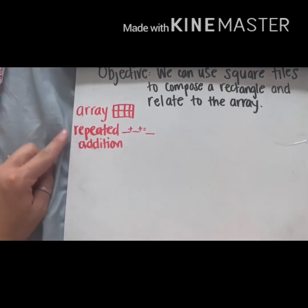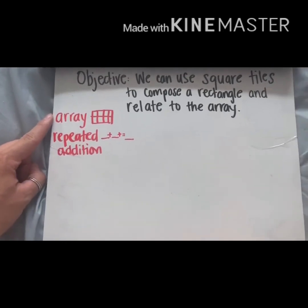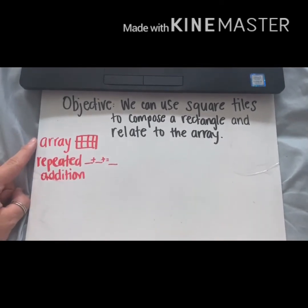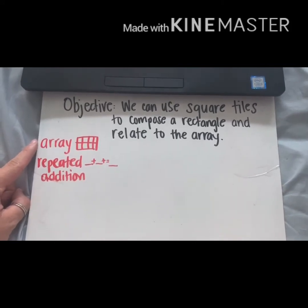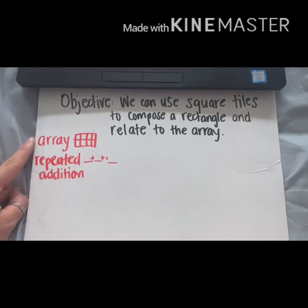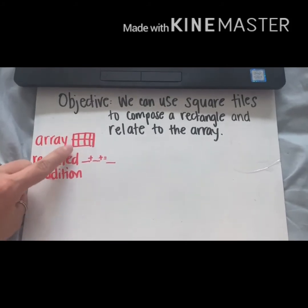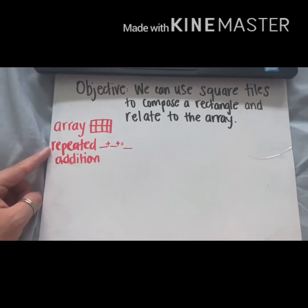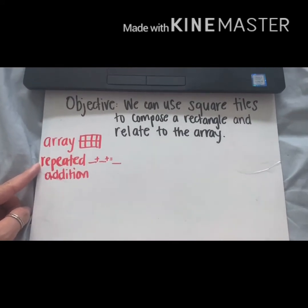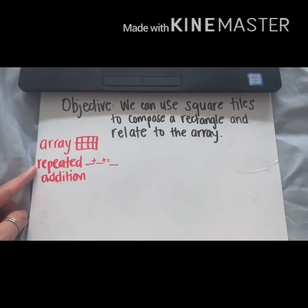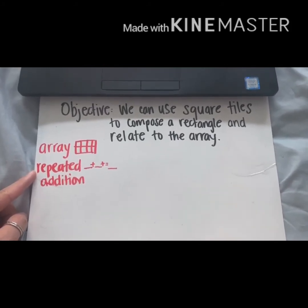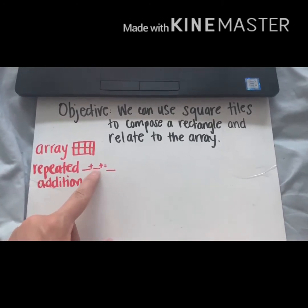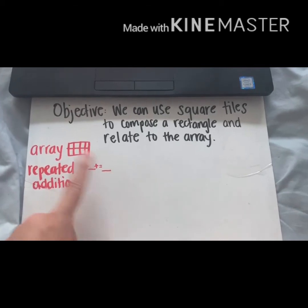Now we see two words on this side: array and repeated addition. Remember, an array is a group of objects that are placed in equal groups with rows and columns. Repeated addition is the term we use when we want to find the total amount of tiles or objects in the array — that's why you see addition, because we're finding the total of all objects.